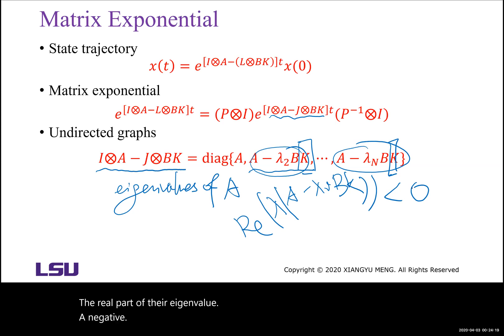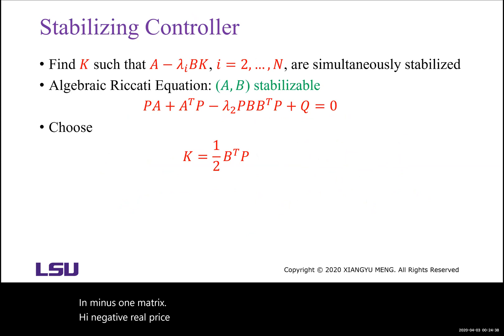Our task will show you how to design the K to make all eigenvalues of this N minus 1 matrix have negative real parts. So how to find the K? Now let me directly tell you the answer.